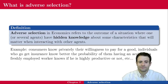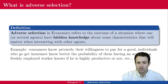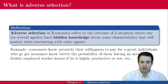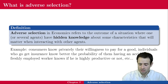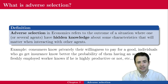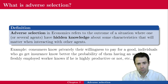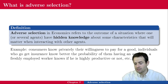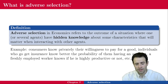First, the definition. Adverse selection in economics refers to the outcome of a situation where one or several agents have hidden knowledge about some characteristics that will matter when interacting with other agents. For instance, consumers know privately their willingness to pay for a good but the firm selling this good doesn't. Individuals who get insurance know better the probability of them having an accident than the actual insurance company. A freshly employed worker knows if he is highly productive or not, but the employer might not necessarily know this at the time of the hire.